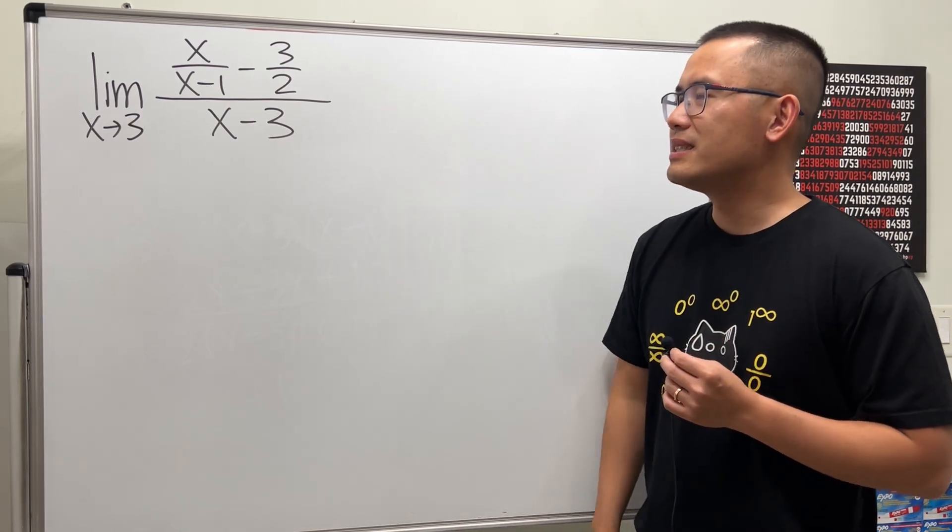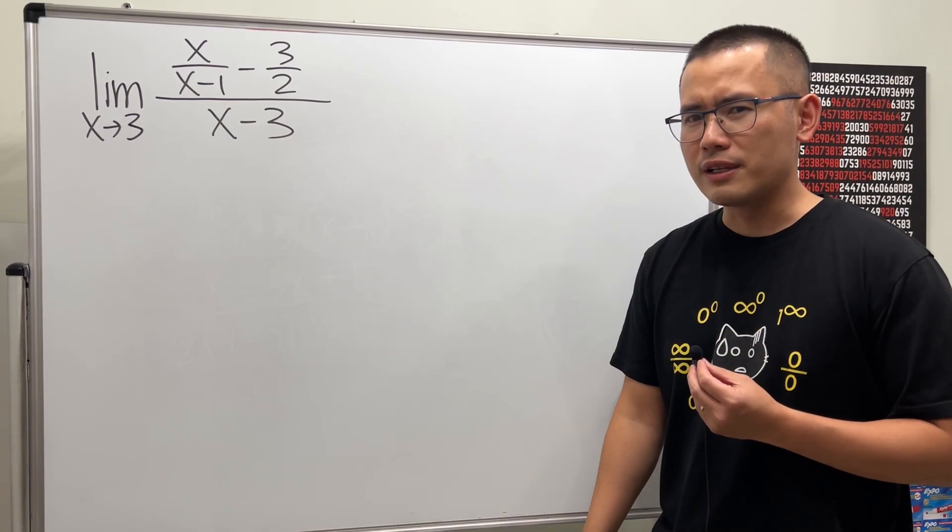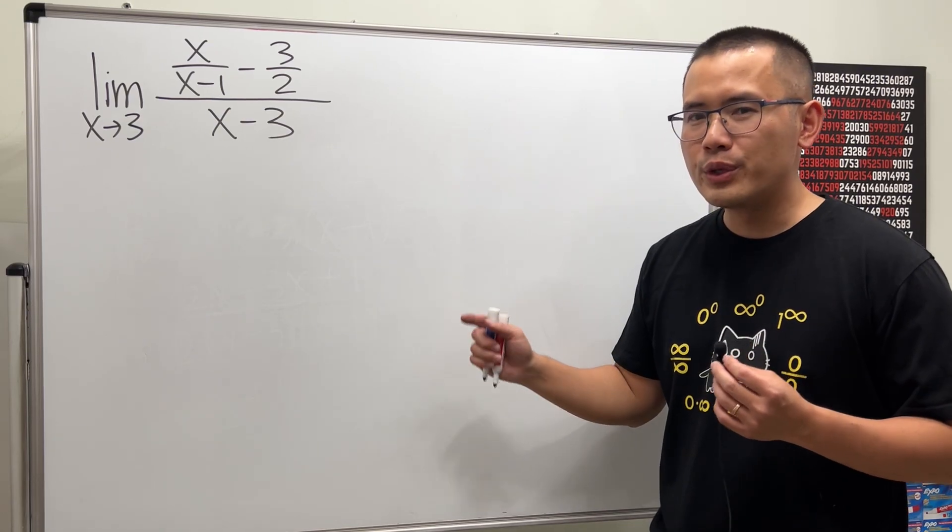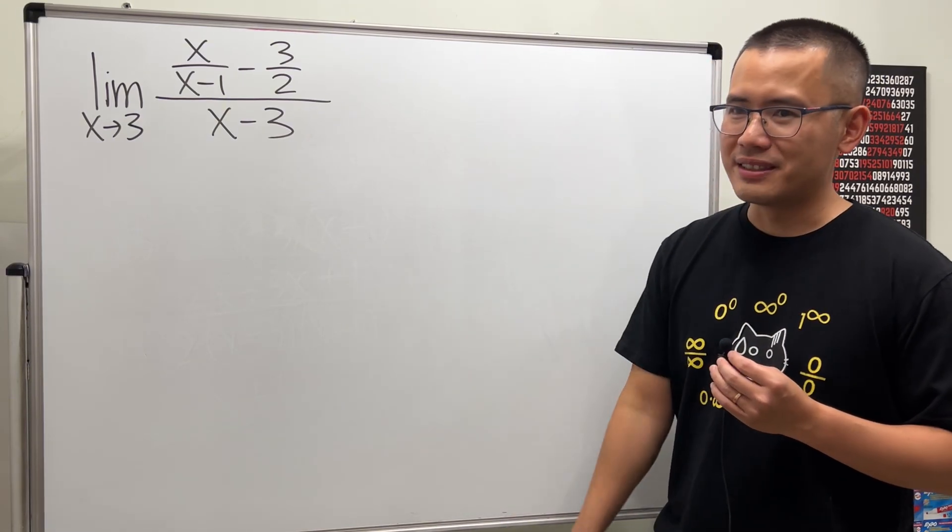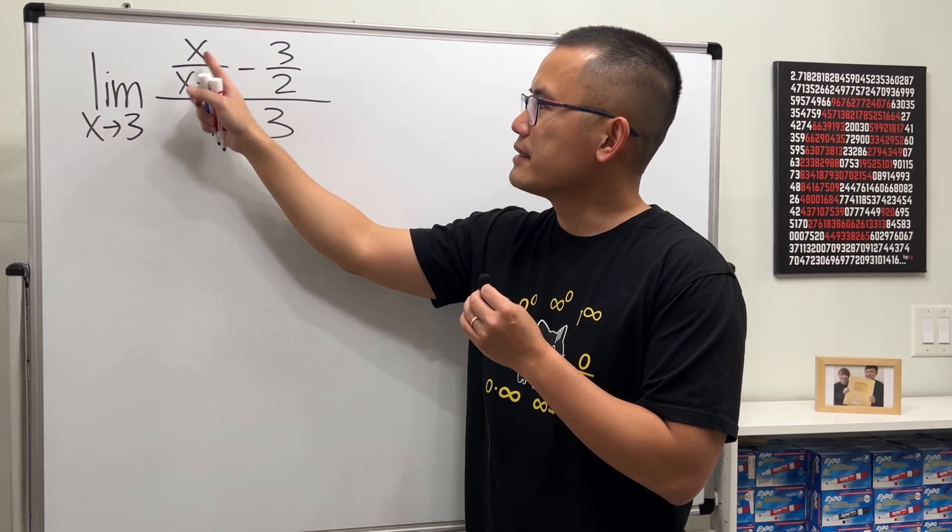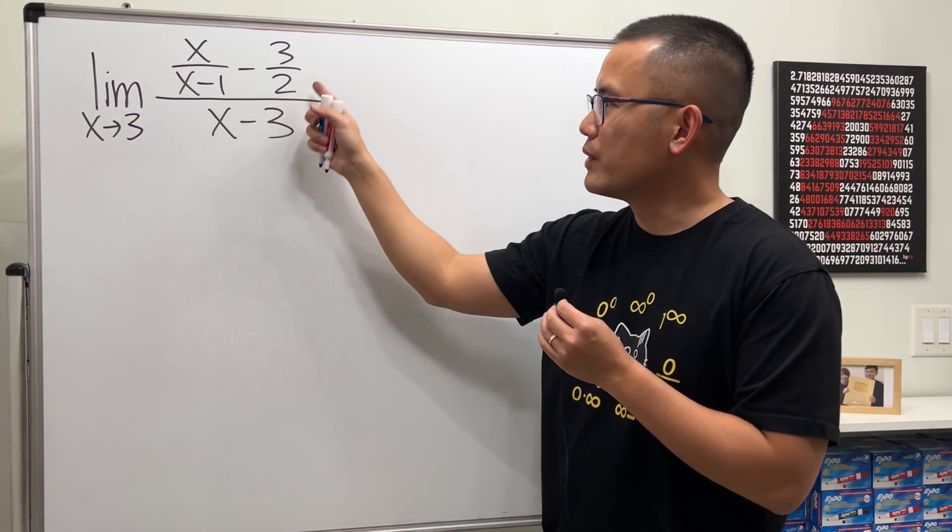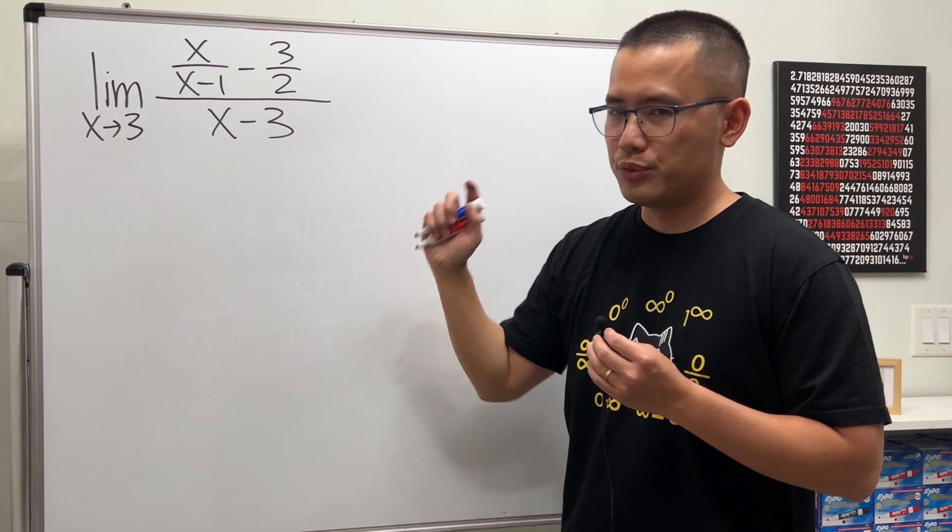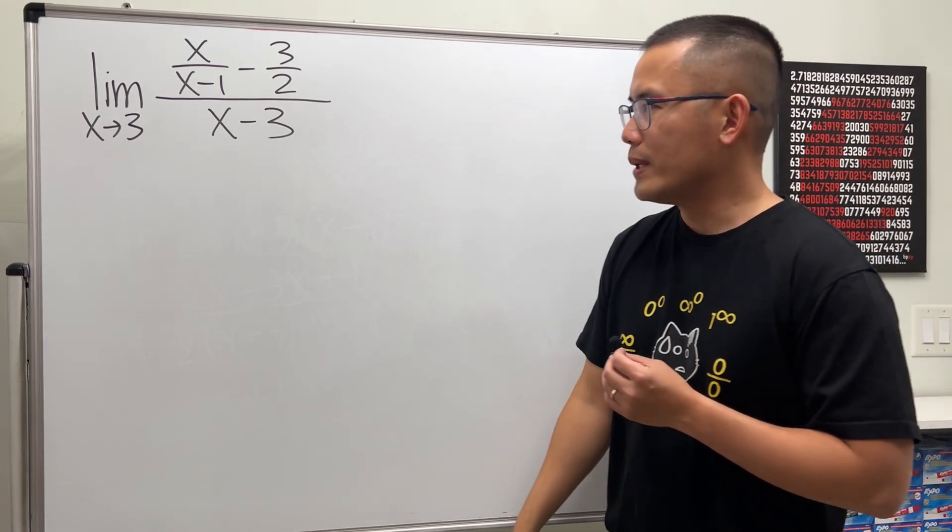If you're working with this kind of limit in your calculus 1 or pre-calculus class, then you have to know the secret. It's going to help you tremendously. So here we have the limit as x approaching 3 of x over x minus 1 minus 3 over 2, or over x minus 3. The first thing I should always do is plug in 3 into all the x's.